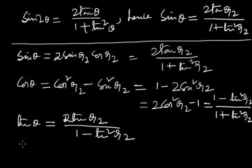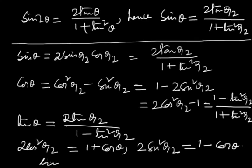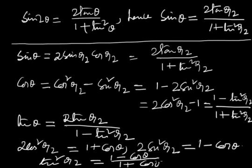Also, 2cos²(θ/2) equals 1 plus cos θ, 2sin²(θ/2) equals 1 minus cos θ, and tan²(θ/2) equals 1 minus cos θ by 1 plus cos θ. These are the standard formulas of sub-multiple angles expressed in terms of θ/2. That's all, thank you.